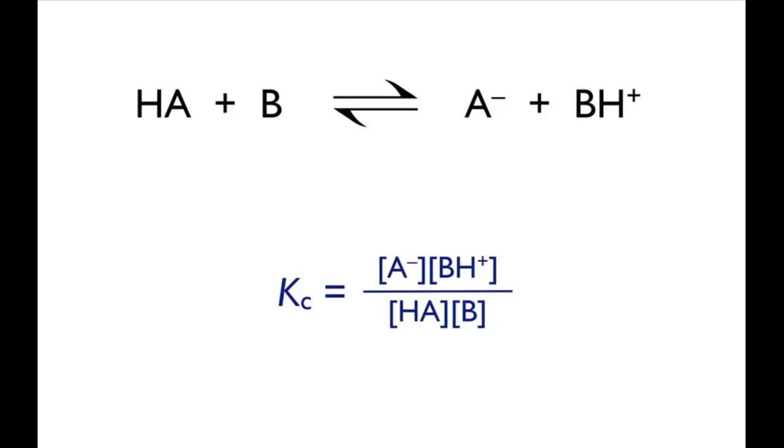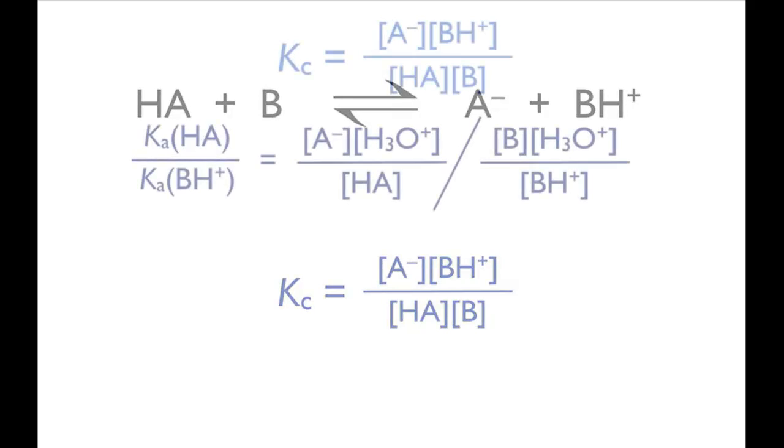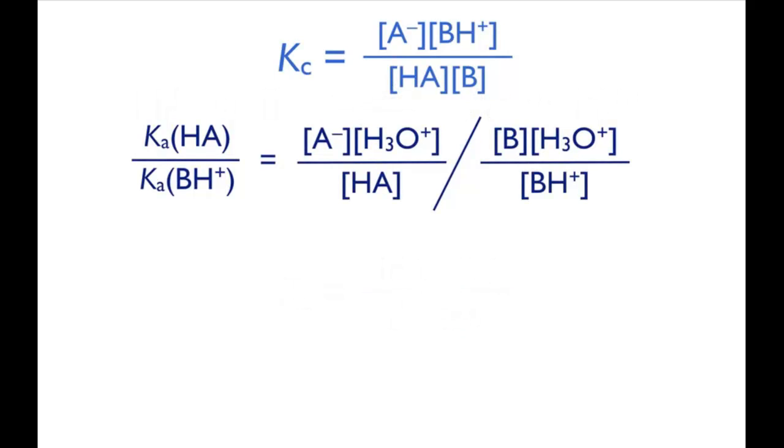Whereas the concentration of BH plus over the concentration of B is related to Ka for BH plus. In fact, Kc is equal to the acidity constant for HA divided by the acidity constant for BH plus.